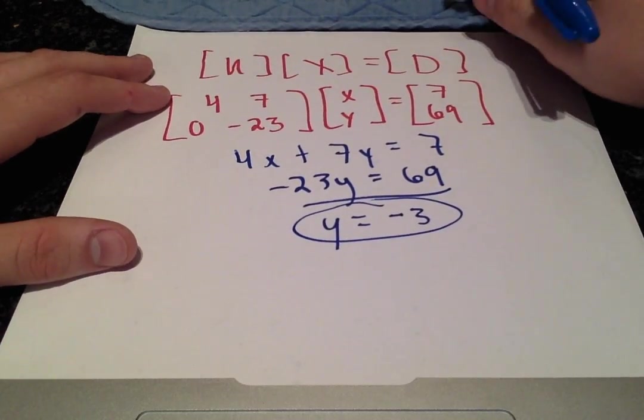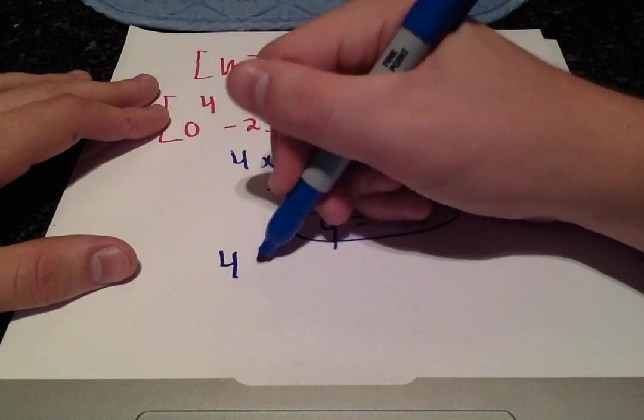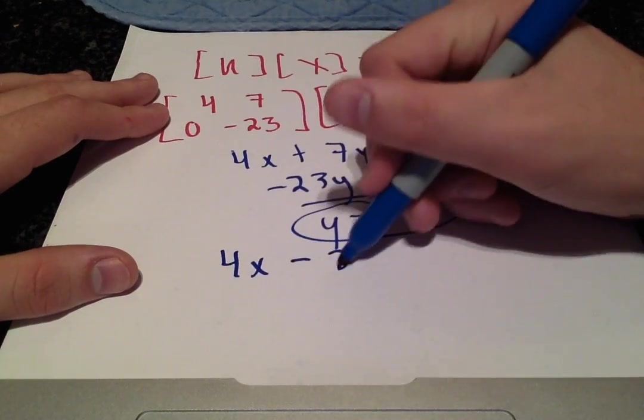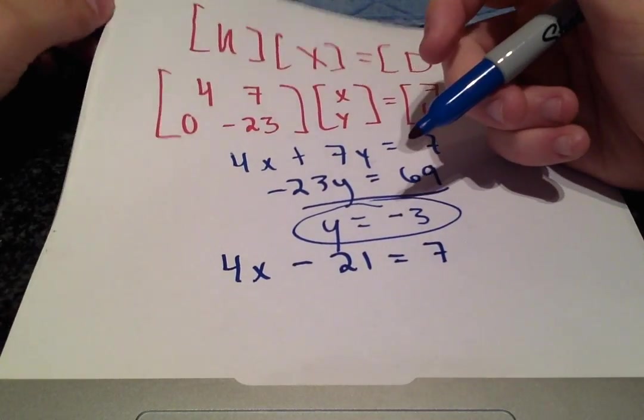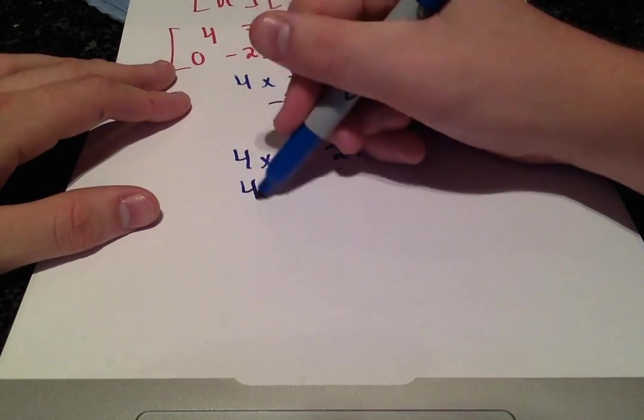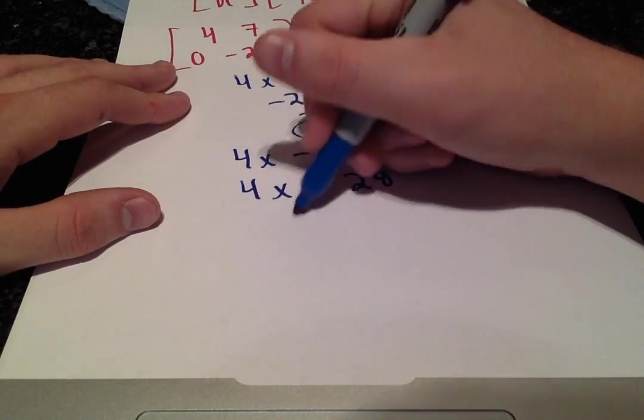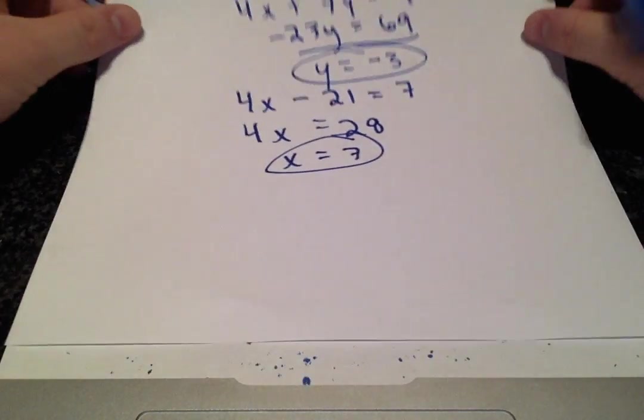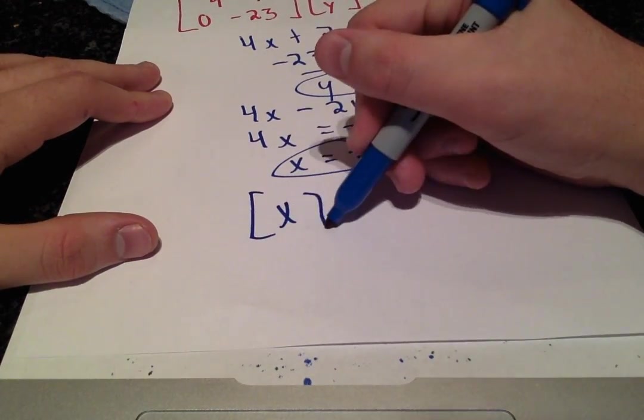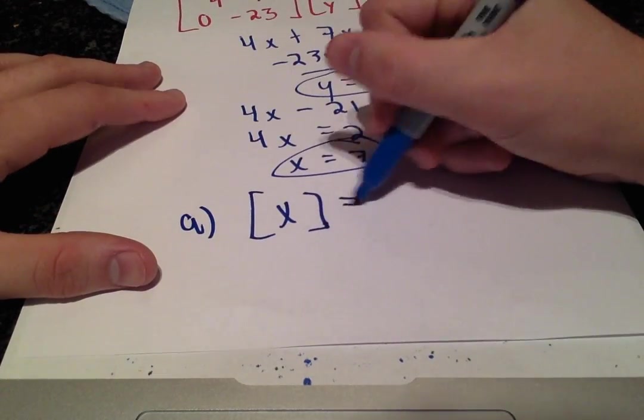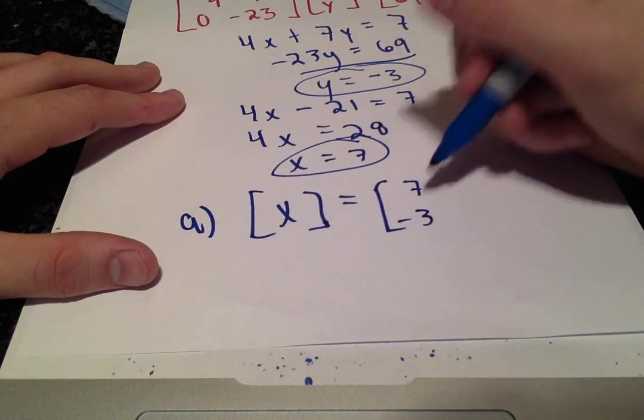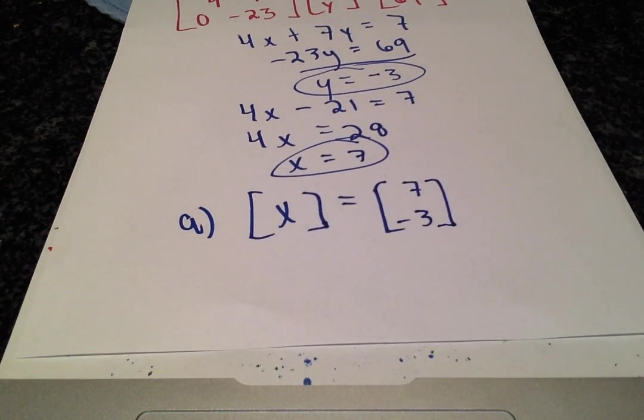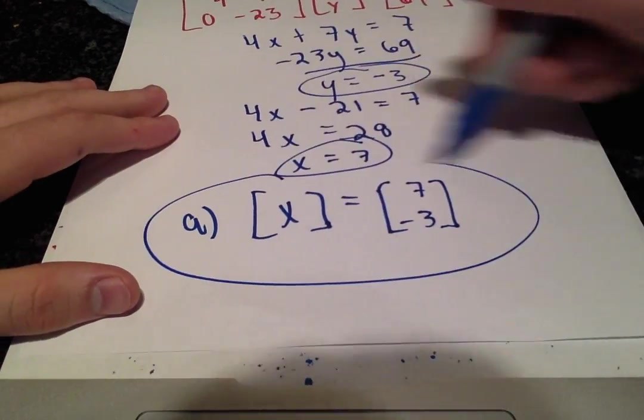Plugging that back into the equation above, we get 4X minus 21 is equal to 7, or 4X is equal to 28, and X is equal to 7. So we have found our first solution vector for part A. X is equal to 7, negative 3. I'll leave that for you to verify.